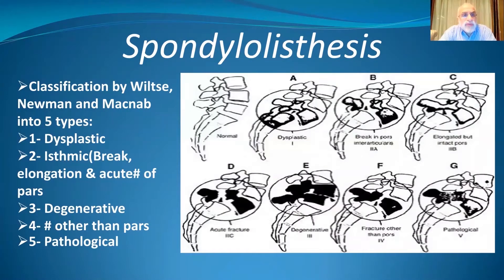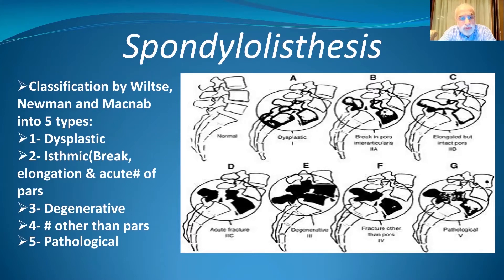The famous classification by Wiltse, Newman and MacNab classifies spondylolisthesis into five types. Type one is dysplastic, type two is isthmic — which is our topic today — and the isthmic pars may be broken, elongated, or present with an acute fracture. The third type is degenerative, the fourth is traumatic where fractures can occur anywhere except in the pars, and the fifth is the pathological type.